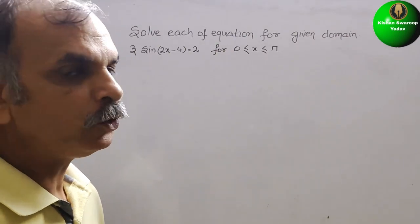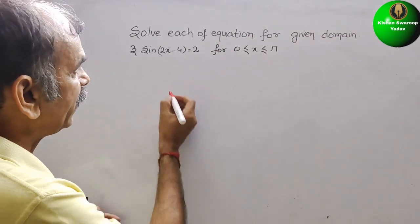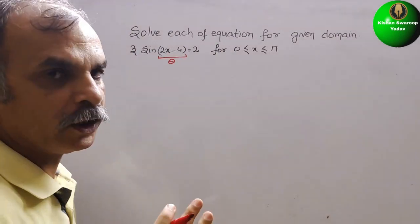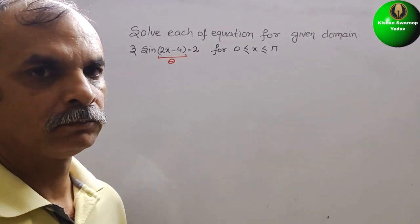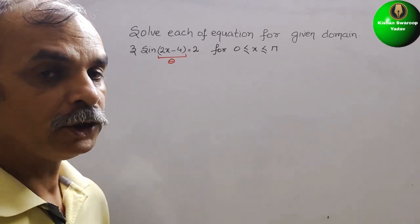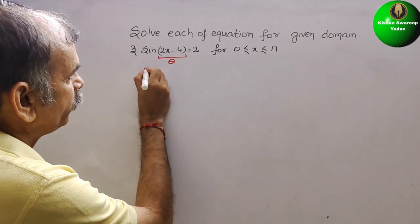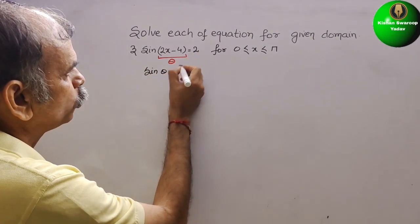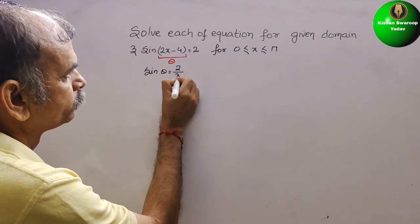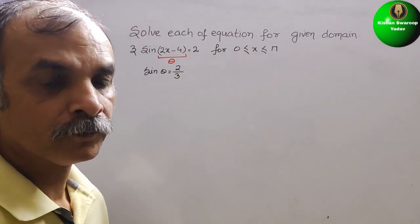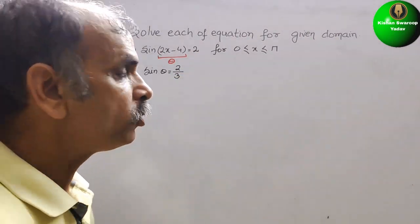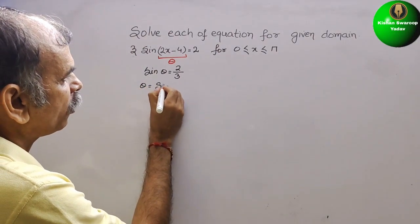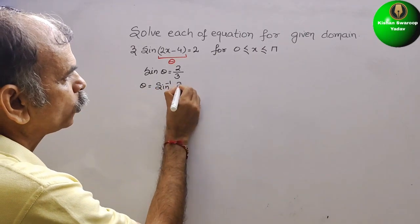The first thing we will do is make a substitution. Let θ = 2x - 4. So what is sin θ now? We can say sin θ = 2/3. Therefore, θ = sin⁻¹(2/3).